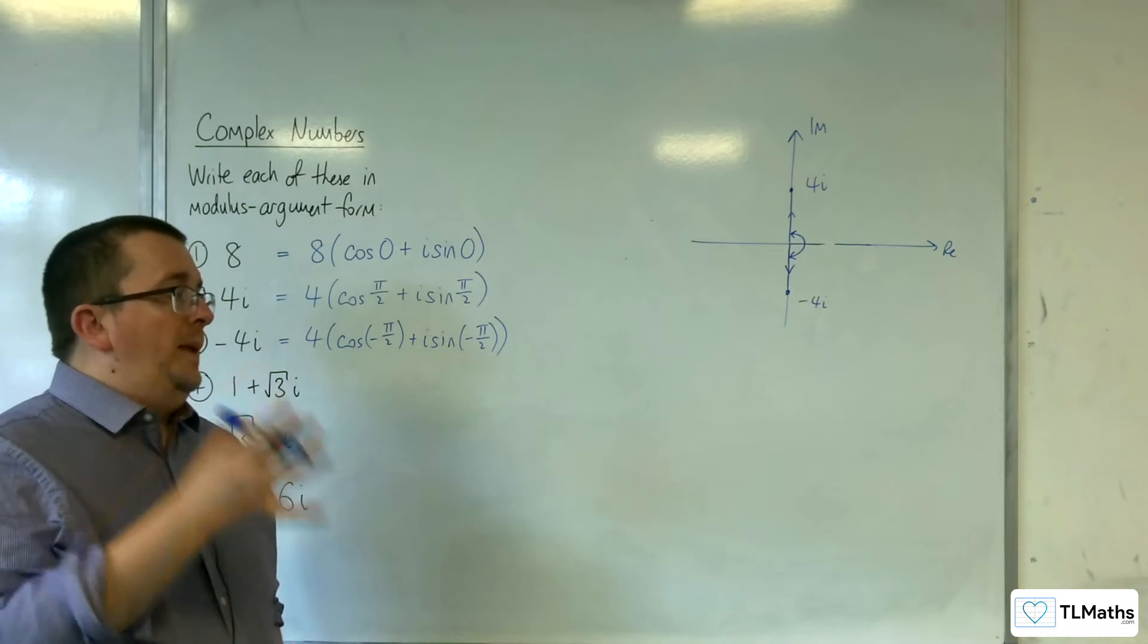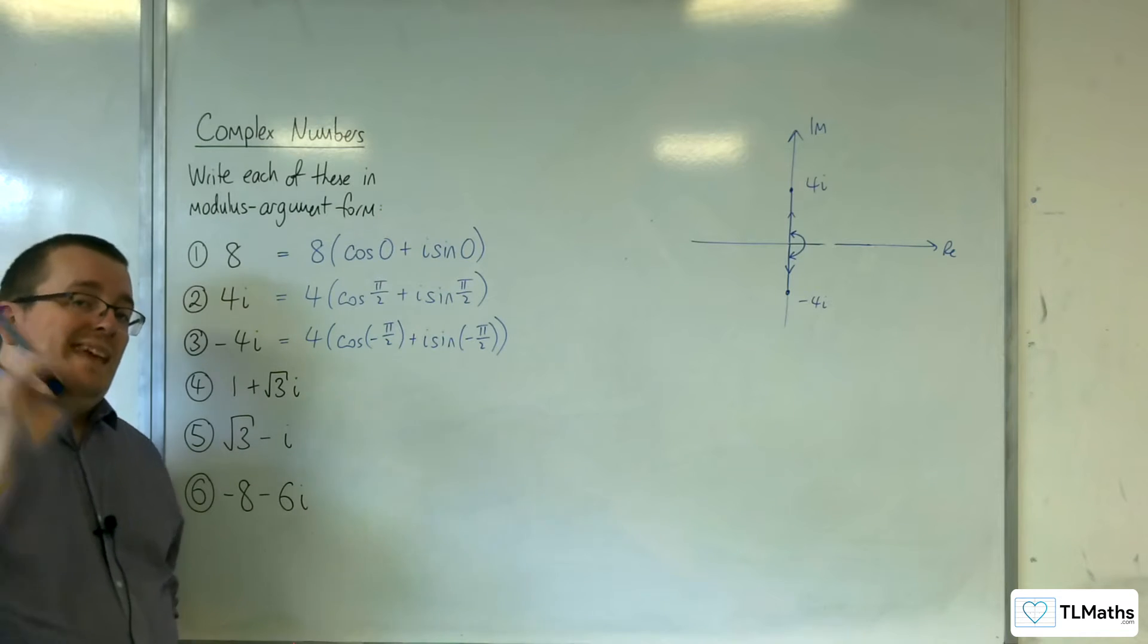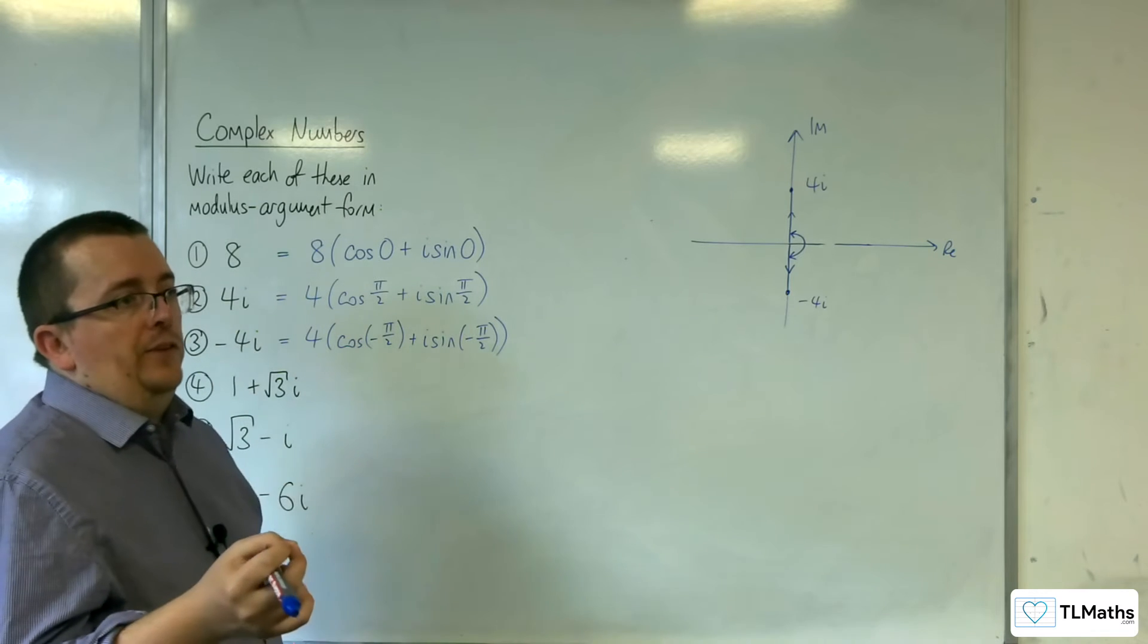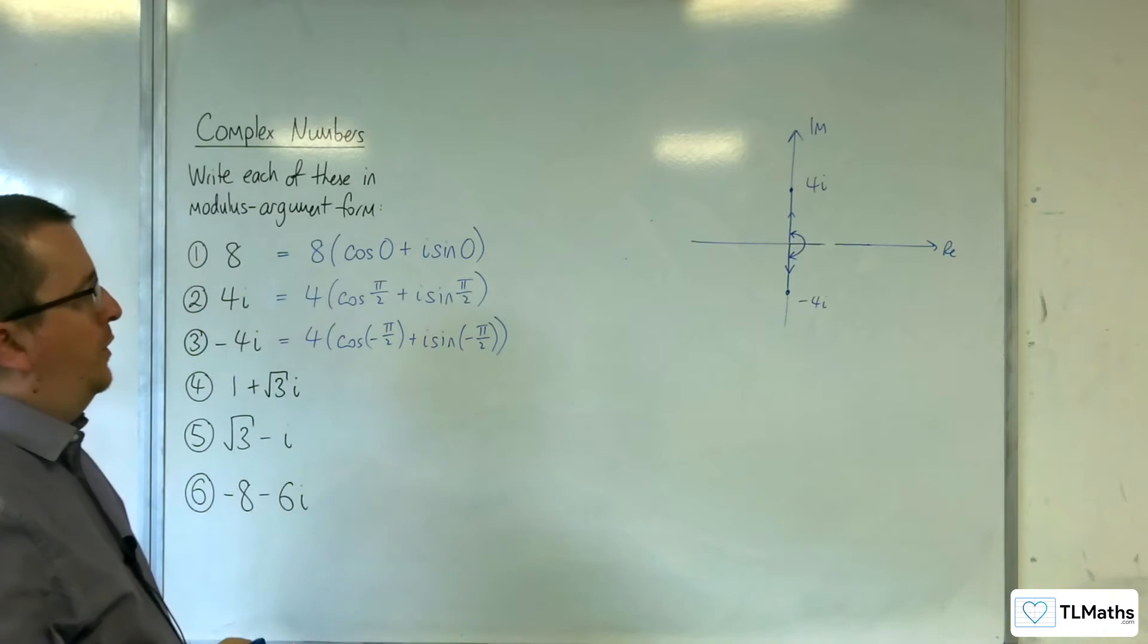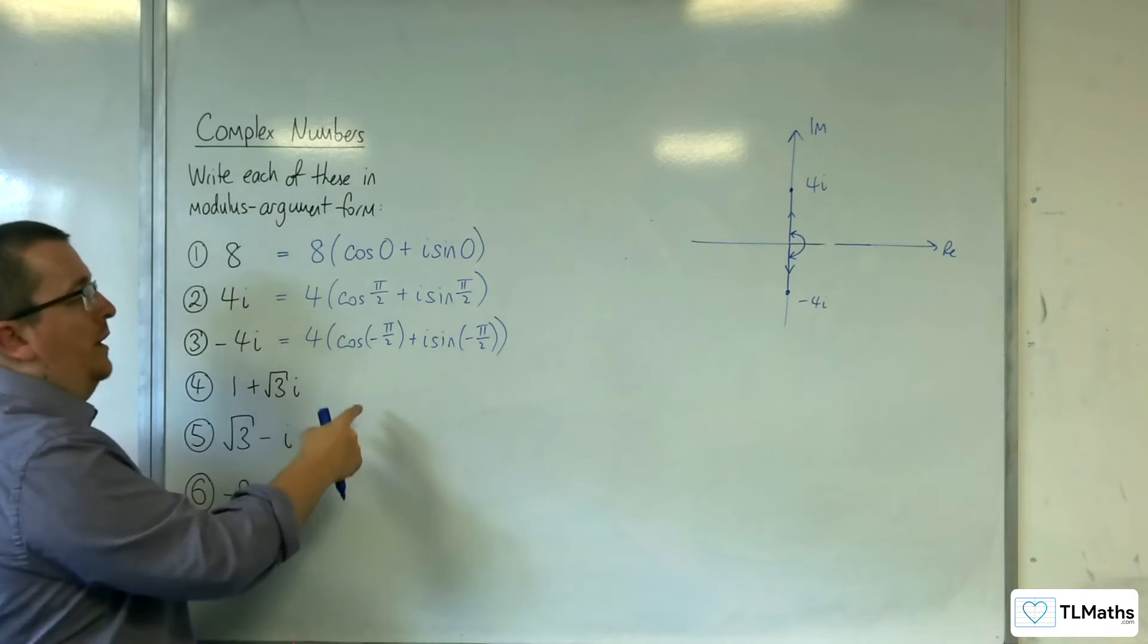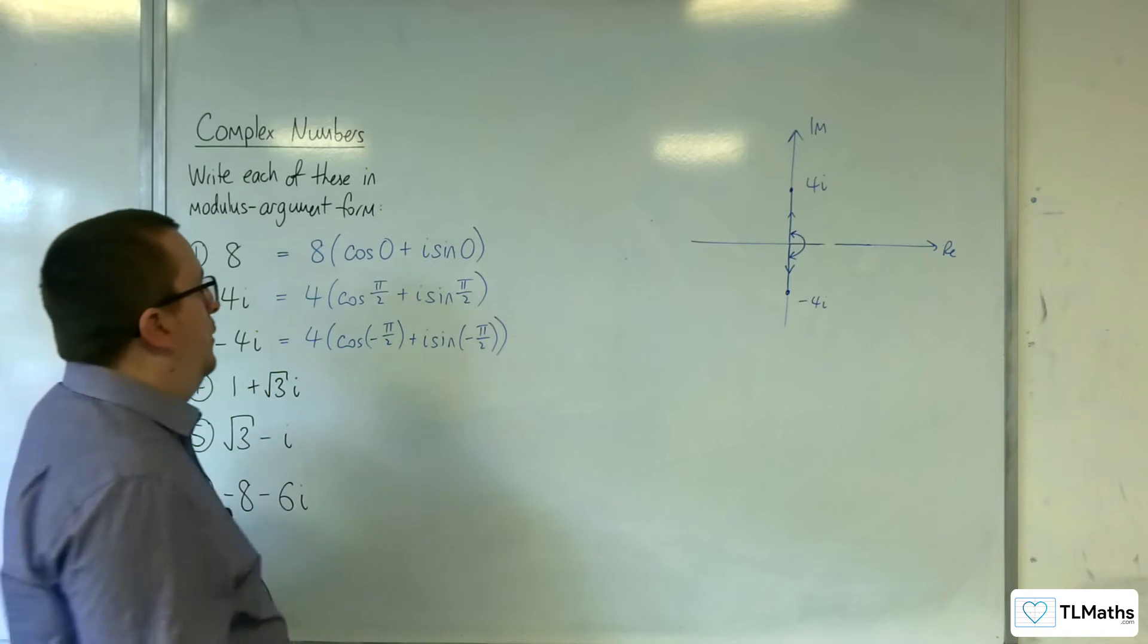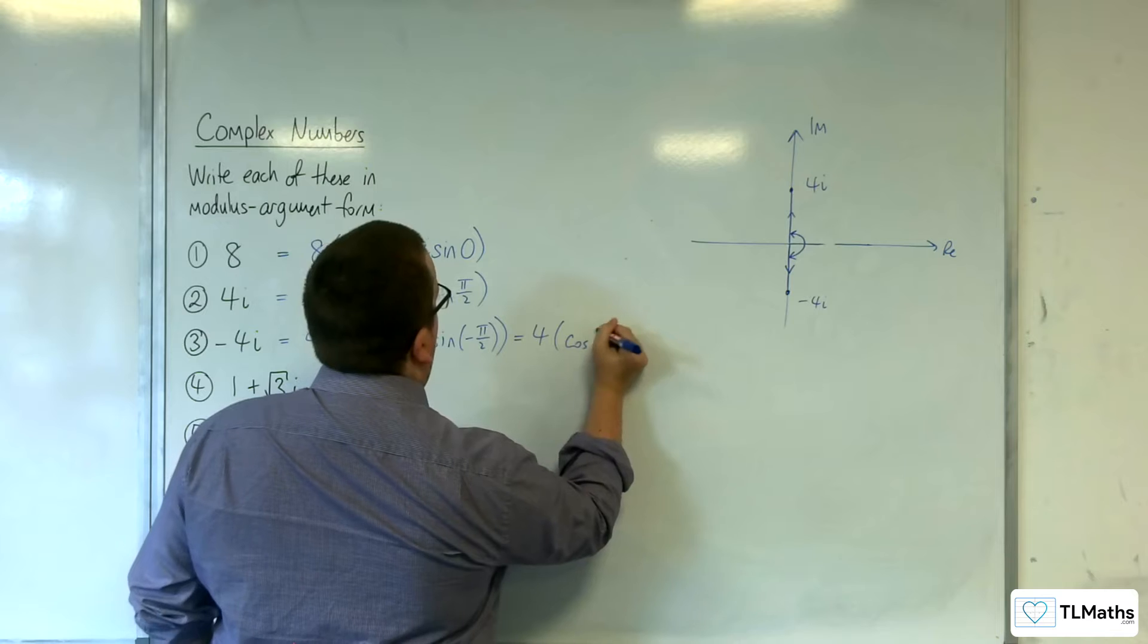Now, to be clear on that, because cosine is referred to as an even function and sine is an odd function—this is stuff that you can find videos on for A-level maths. Because cosine is an even function, cosine of minus π over 2 is the same as cosine of π over 2. So you could sink that minus sign into the cosine, writing that as cosine of π over 2.